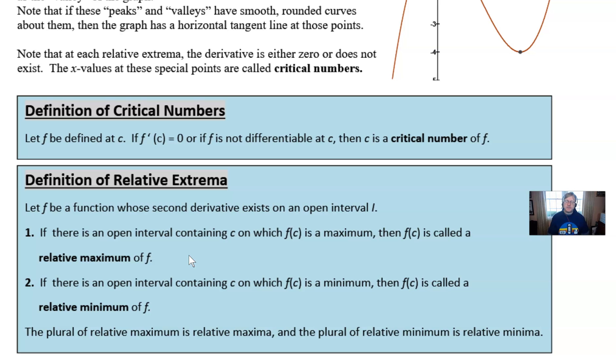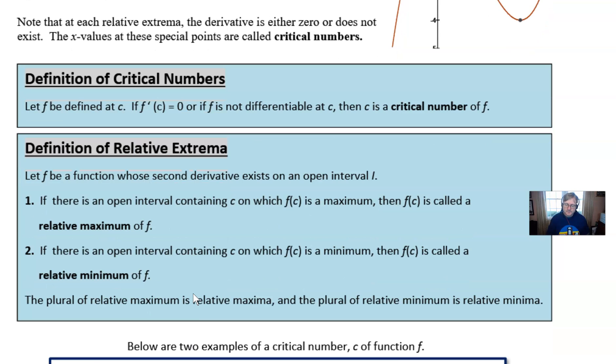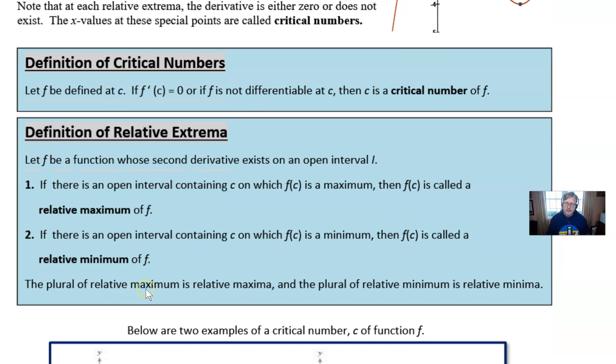So if we let f be defined at some value c, if the derivative of f at c is zero or if f is not differentiable at that c then we call c a critical number and that ties into the definition of our relative extrema. If f is a function whose second derivative exists on an open interval, then there is an open interval containing c on which f(c) is a maximum. If that's true then f(c) is going to be the relative max. If there's an open interval containing c on which f(c) is a minimum then we call f(c) the relative minimum. And as I said before the plural of these words look a little different. The plural of maximum is maxima, the plural of minimum is typically minima.